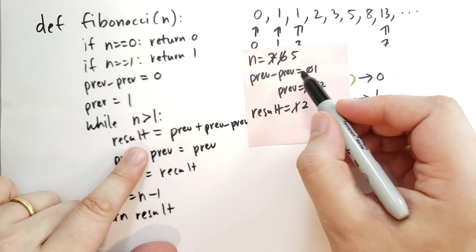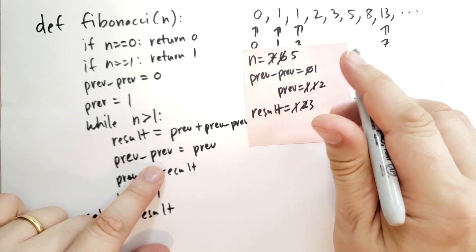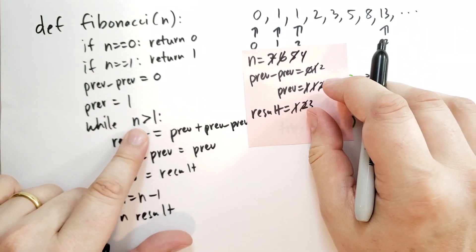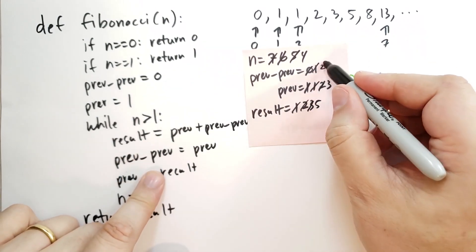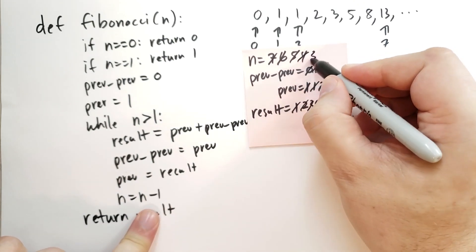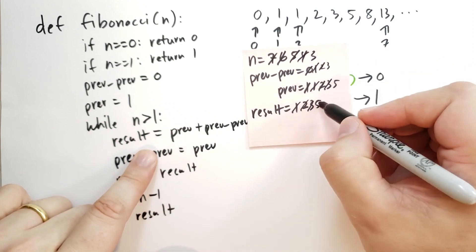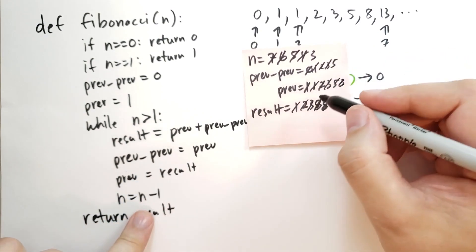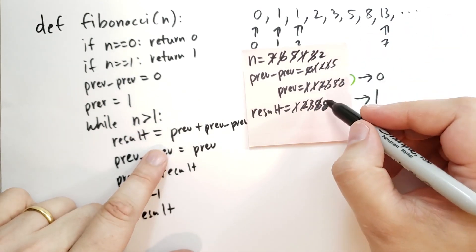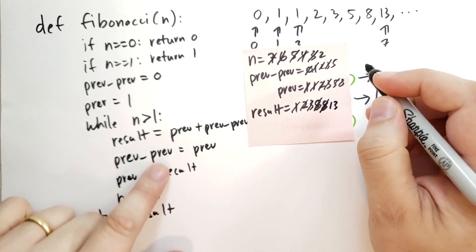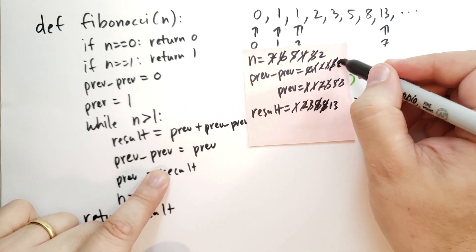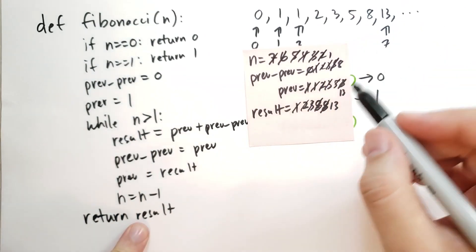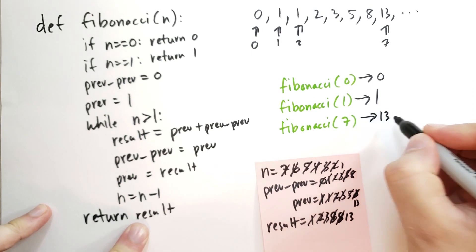Condition holds: result = 2 + 3 = 5. prev_prev becomes 3, prev becomes 5, n decrements to 3. Condition holds: result = 3 + 5 = 8. prev_prev becomes 5, prev becomes 8, n decrements to 2. Condition holds: result = 5 + 8 = 13. prev_prev becomes 8, prev becomes 13, n decrements to 1. Is n greater than 1? No — it's equal to 1. So we return the result, which is 13 — the value we were looking for.